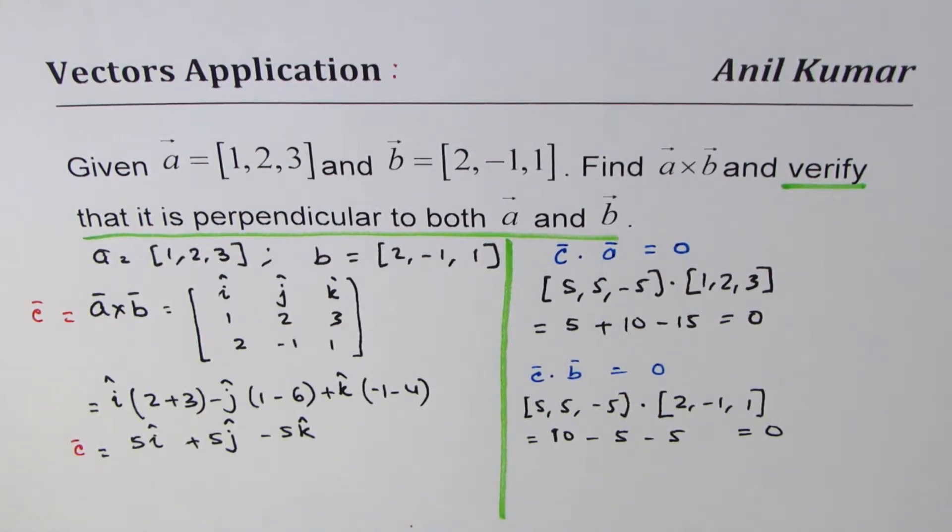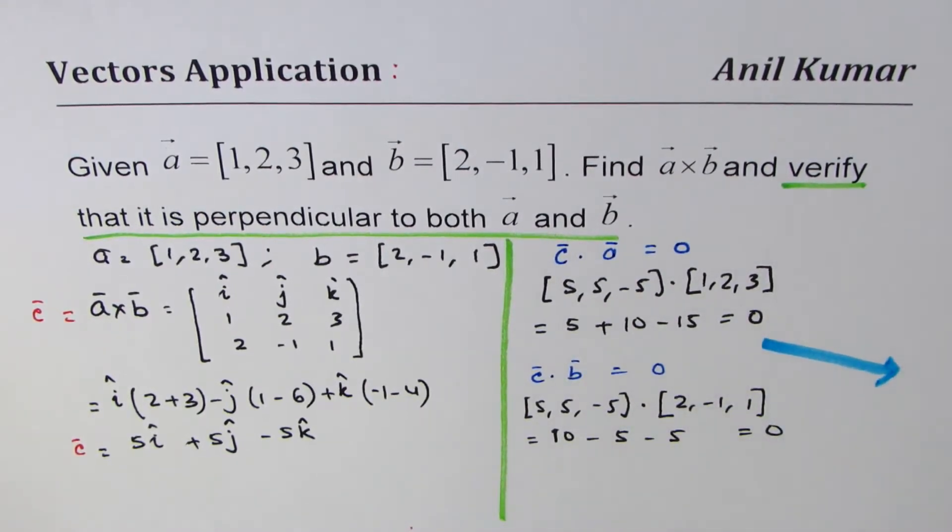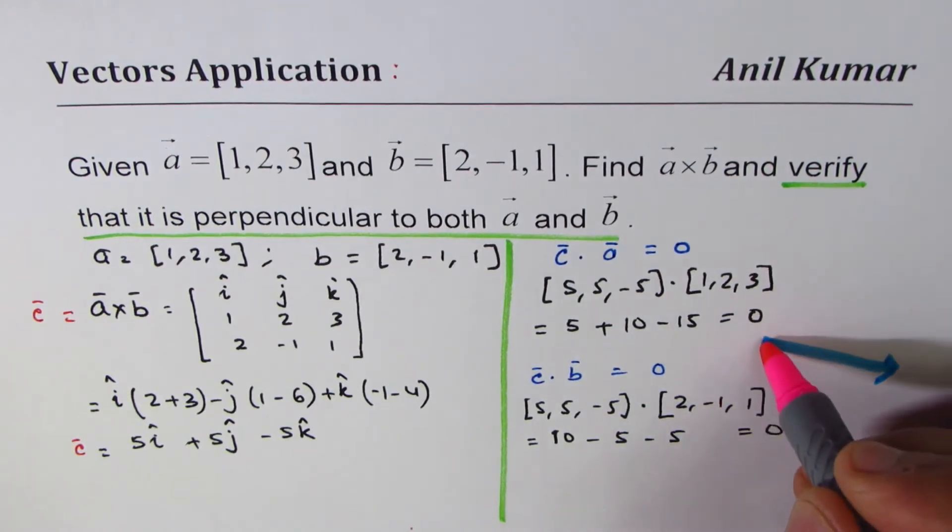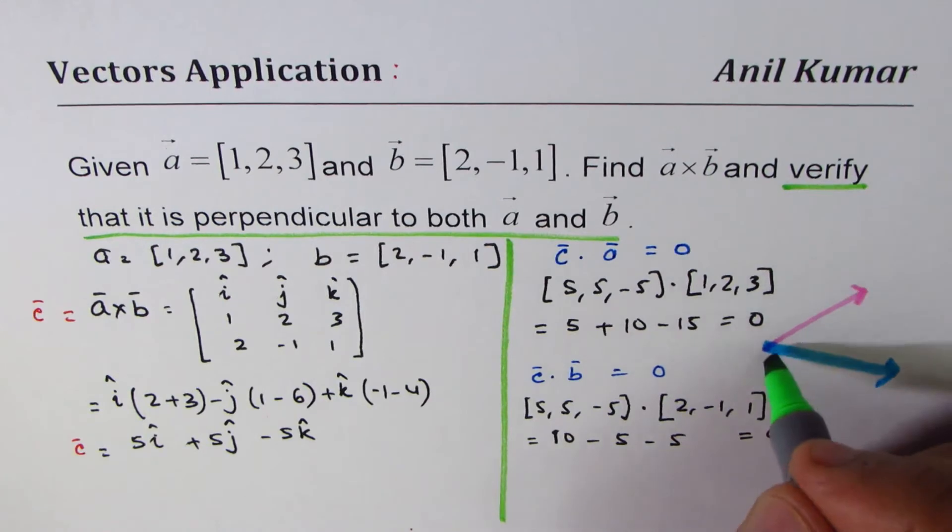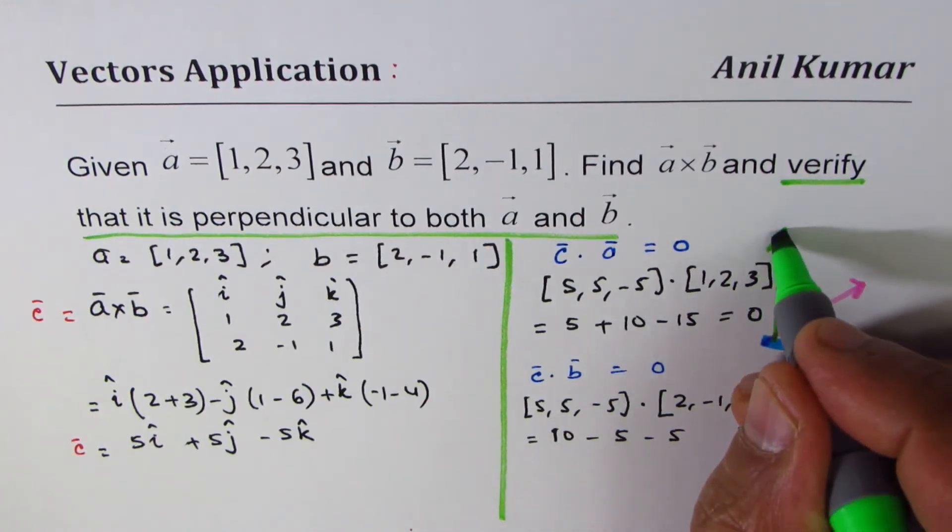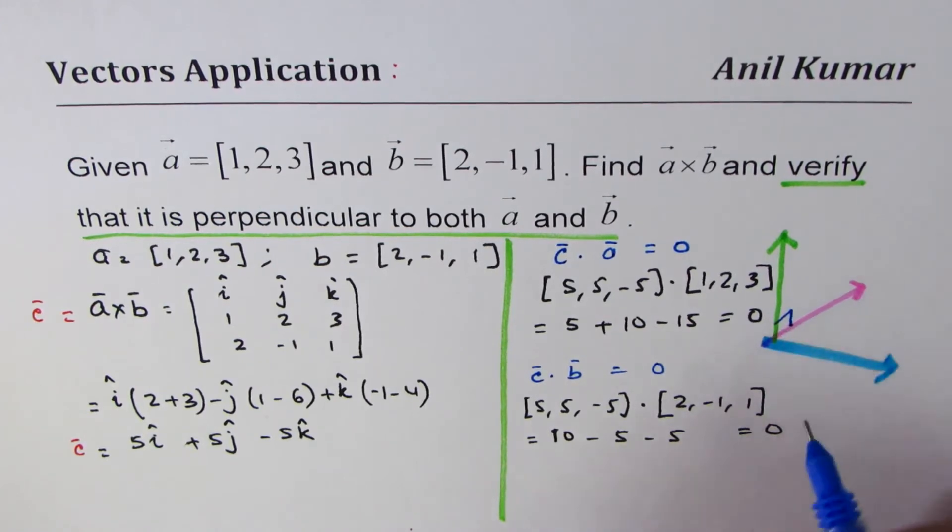So that's the whole idea - whenever you do a cross product, it results into a vector. So if I have a vector like this, a, and let's say vector b, then the result is always perpendicular to both of these vectors, and that's what we verified just now.